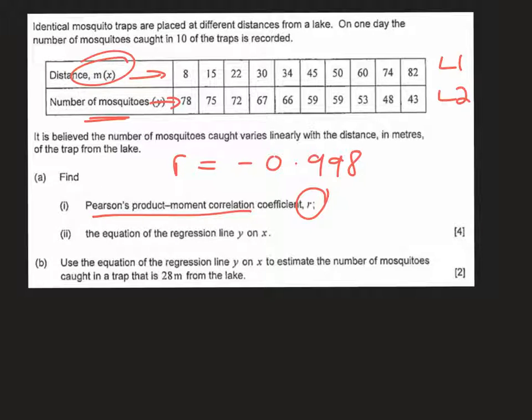You will also see on the screen that you are given a and b. So you will see that the value of a is negative 0.470 and the value of b is 81.7. So in the equation y equals ax plus b, we can see that that's going to be y equals negative 0.470x plus 81.7.